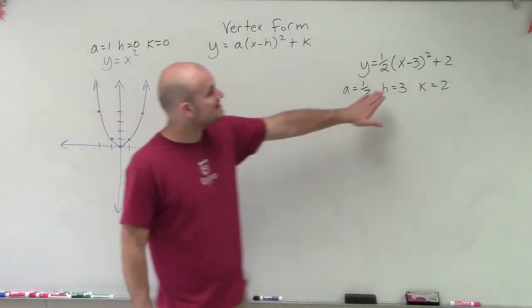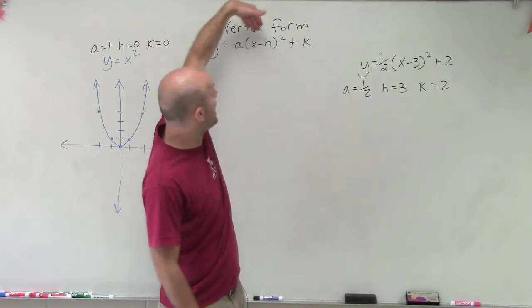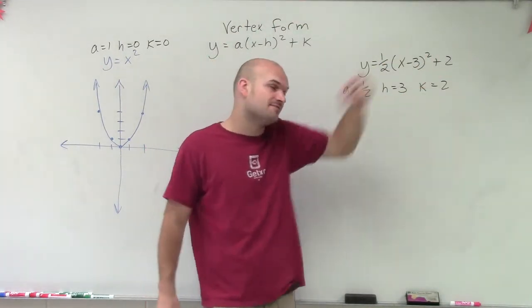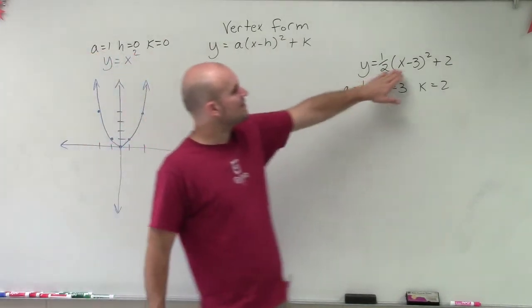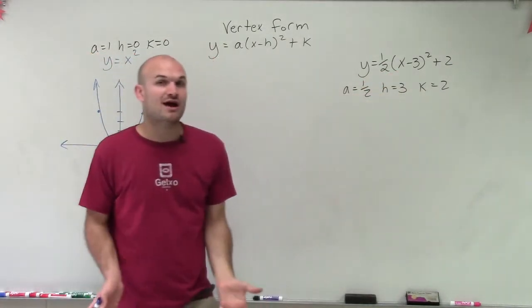My h is a positive 3. Because remember, it's x opposite of h. So that means x opposite of positive 3. And that's going to shift my graph three units to the right. And my k is positive 2, which shifts my graph two units up.